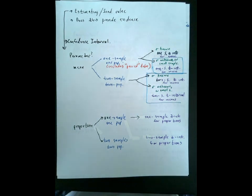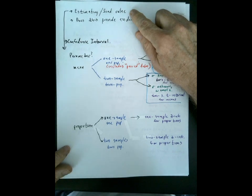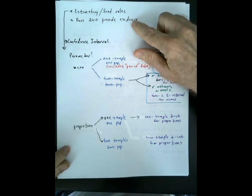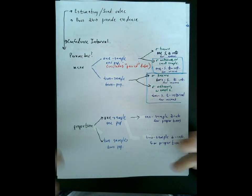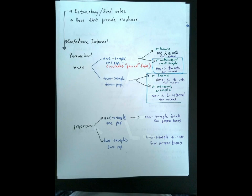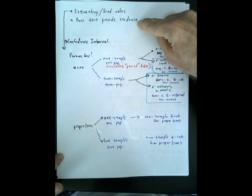There are exactly two kinds of inference we have to worry about. Number one: situations where you're supposed to estimate or find a value from a given situation. Number two: you're given some data relating to a particular stats scenario and asked whether the data provides sufficient evidence to draw a certain conclusion.